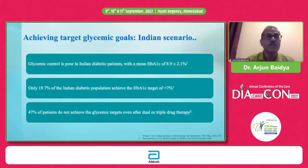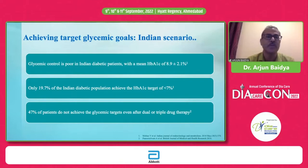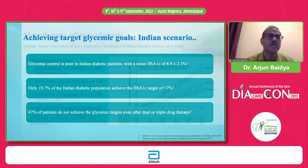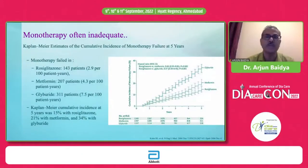It is not easy to achieve target glycemic goals, particularly in the Indian scenario. Glycemic control is very poor in Indian diabetic subjects, with a mean HbA1c of approximately 8.9%. In a study by Dr. Mohan et al. published in 2014, only 19.7% of Indian diabetic patients achieved their target HbA1c goal of less than 7%. In another global study, 47% of patients did not achieve the glycemic target even after two or three drugs.